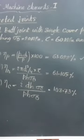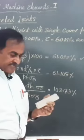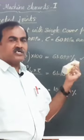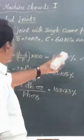61.099%. Therefore, the efficiency of the riveted joint—that is, a butt joint with single cover plate which we have analyzed—is 61.099%.